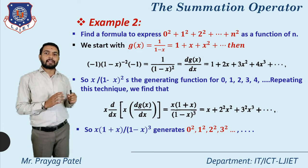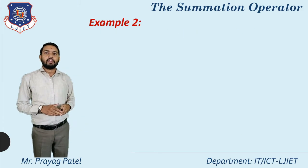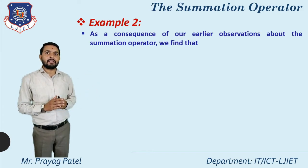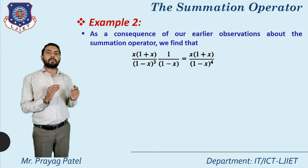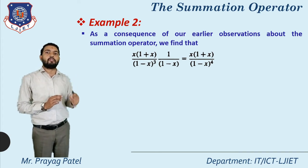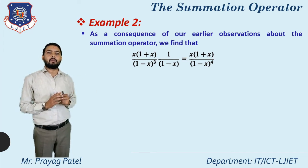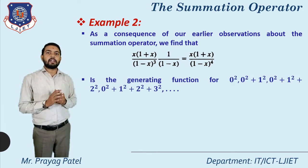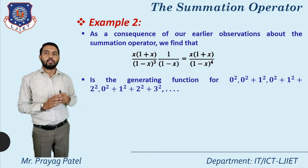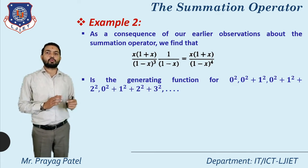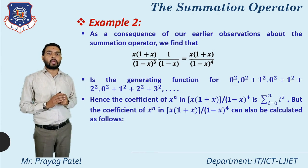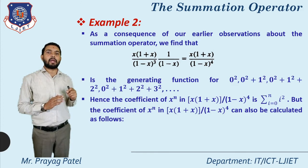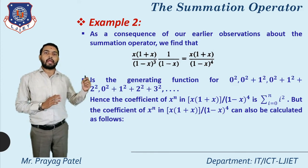Consequently, applying the summation operator: x(1+x)/(1-x)³ · 1/(1-x) = x(1+x)/(1-x)⁴ is the generating function for 0², 0²+1², 0²+1²+2², 0²+1²+2²+3², and so on. So the coefficient of x^n in x(1+x)/(1-x)⁴ equals Σ(i=0 to n) i².